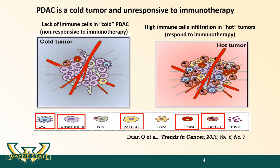The extensive immune suppression in PDAC comes from the coordinate action of regulatory T cells and myeloid-derived suppressor cells such as macrophages, which block cytotoxic T cells in tumor recognition and clearance. Also, due to low immune cell infiltration, PDAC tumors are non-responsive to immunotherapy.